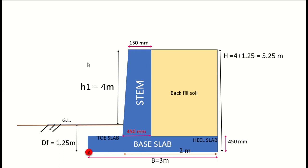As per the given data, the height of the retaining wall above ground level is 4 meters. The depth of foundation beneath ground level is 1.25 meters. The width of the base slab is 3 meters. The thickness of the base slab is 450 mm, the thickness of the stem at the bottom is 450 mm and at the top is 150 mm. So the total height of the retaining wall from top to bottom is 5.25 meters.